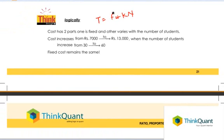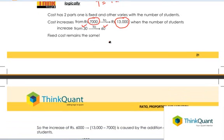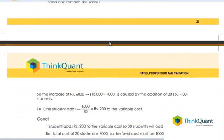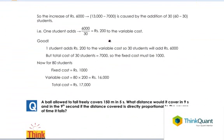So our total cost has got a fixed part as well as a variable part. Now our cost, or the total cost, increases from 7,000 to 13,000 when the number of students increase from 30 to 60. You know that the fixed cost remains the same—it doesn't change.